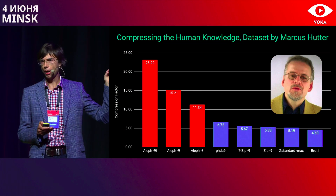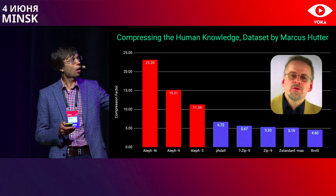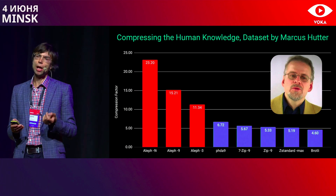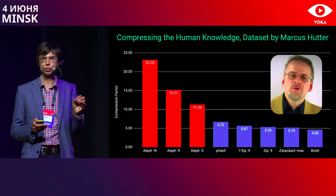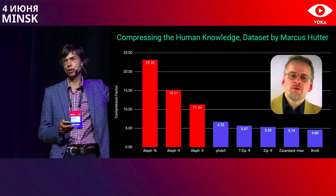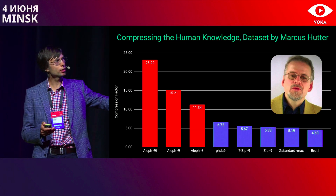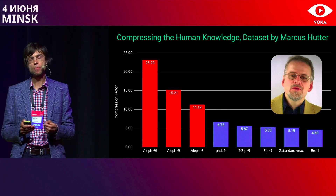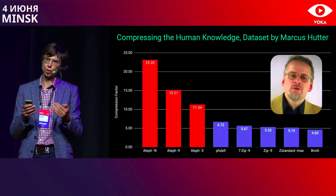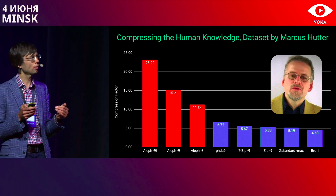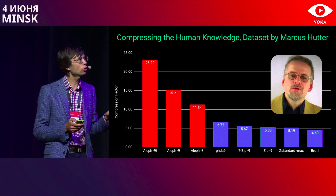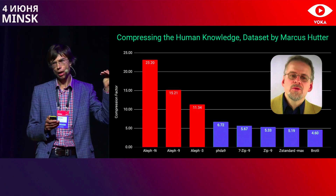This graph illustrates compression factors of different algorithms. On the right side, you have the state of the art: 7-zip, Zstandard, and Brotli, giving a compression factor of about 5 to 6 when compressing Wikipedia — both text and images. This test was created by German mathematician Markus Hutter, who set up a prize of 50,000 euros for extra compression. Over the years, scientists gained 3 to 6% and won prizes for it. But Aleph achieved an astonishing 56% at once.